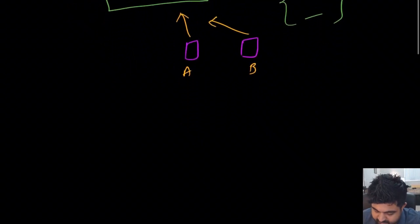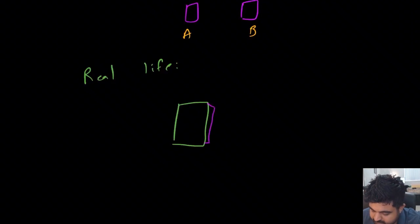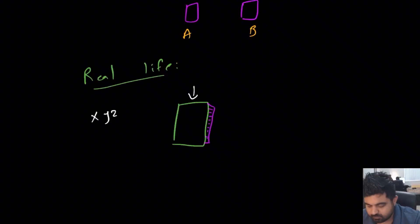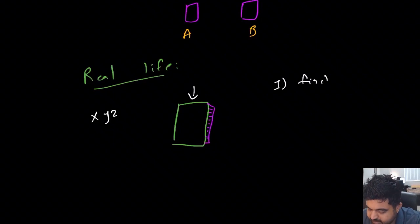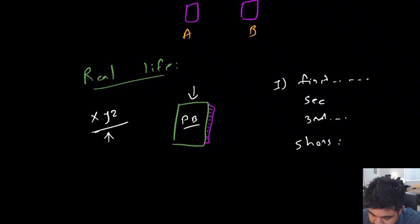Let's try to understand this with a real-life scenario. Let's say your dad tells you to go to a phone book — not on your phone, but an actual physical book with numbers of all vendors present around the city. Your dad asks you to find the number of XYZ plumber. So you have two ways to find the solution. The first way is you start from the first page and go linearly — first page, second page, third page — and eventually after, let's say five hours, you find the number for XYZ plumbing.